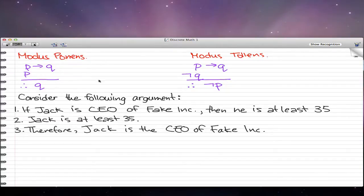Consider the following argument: If Jack is the CEO of Fake Inc., then he is at least 35 years old. Jack is at least 35, therefore Jack is the CEO of Fake Inc.